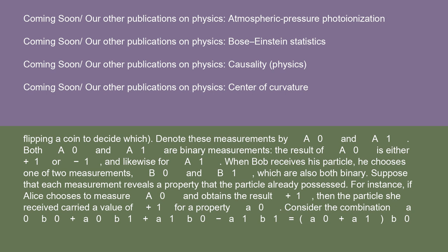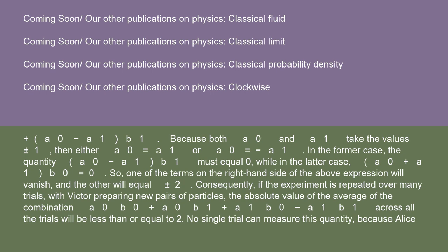Consider the combination A0B0 + A0B1 + A1B0 − A1B1 = (A0 + A1)B0 + (A0 − A1)B1. Because both A0 and A1 take values plus or minus 1, either A0 equals A1 or A0 equals minus A1. In the former case, the quantity (A0 − A1)B1 must equal 0, while in the latter case (A0 + A1)B0 equals 0. So one of the terms will vanish and the other will equal plus or minus 2. Consequently, if the experiment is repeated over many trials with Victor preparing new pairs of particles, the absolute value of the average of A0B0 + A0B1 + A1B0 − A1B1 across all trials will be less than or equal to 2.